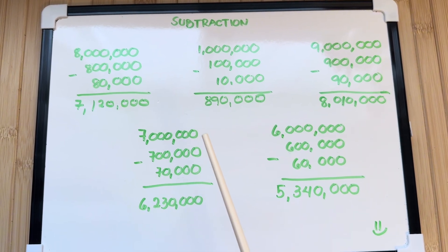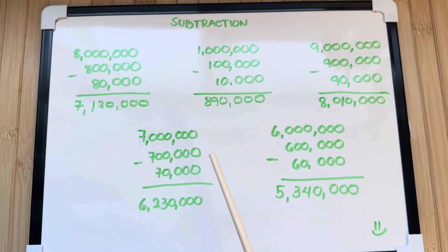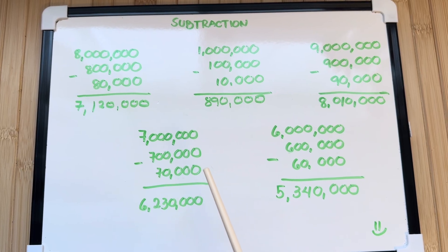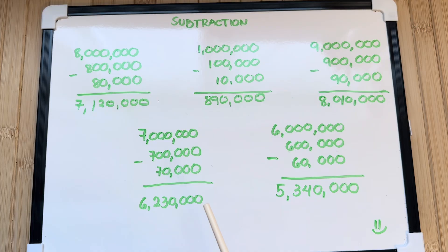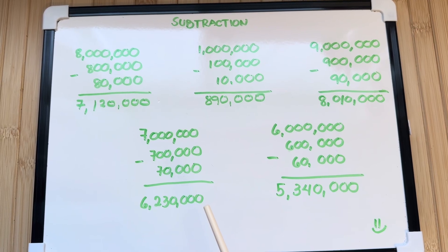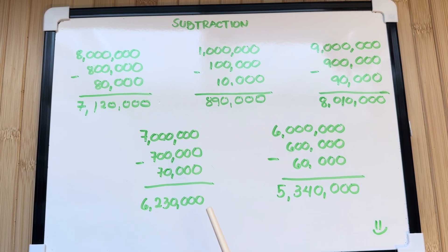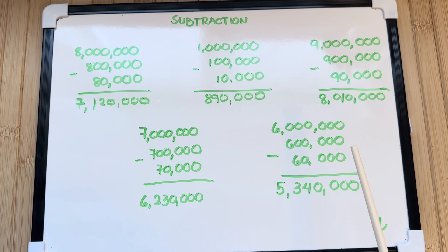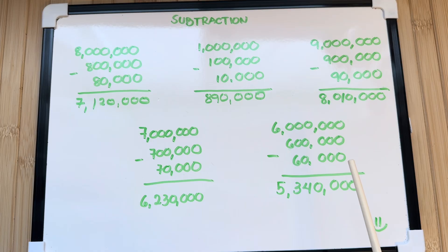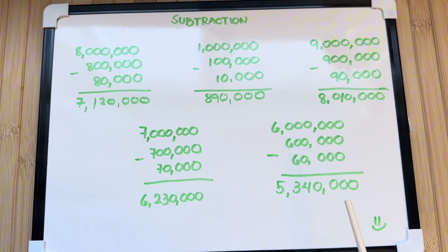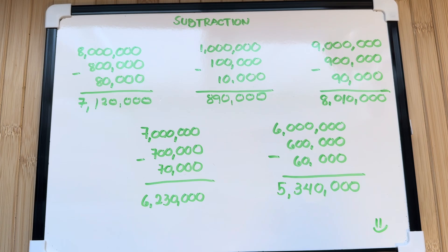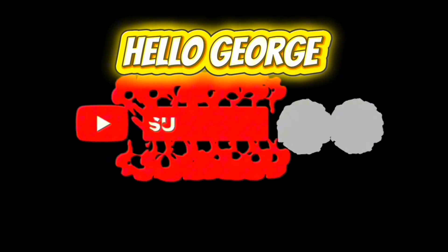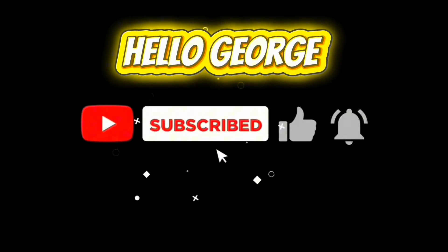7,000,000 minus 700,000 minus 70,000 is equals to 6,230,000. And lastly, 6,000,000 minus 600,000 minus 60,000 is equals to 5,340,000. Please don't forget to like and subscribe to our channel. Have a great day everyone.